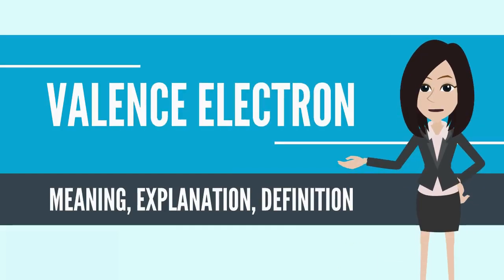Valence electron. In chemistry, a valence electron is an outer shell electron that is associated with an atom, and that can participate in the formation of a chemical bond if the outer shell is not closed.